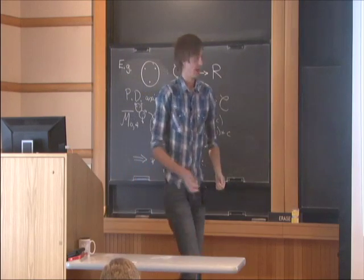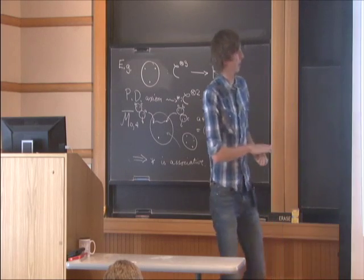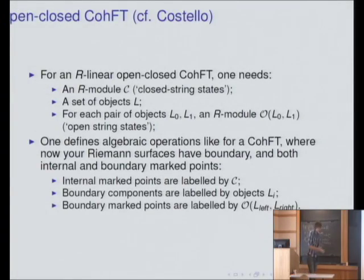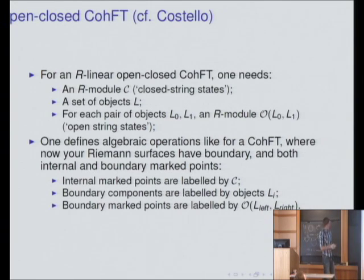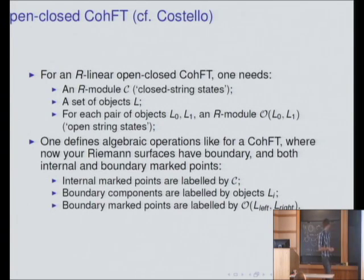A relation in this moduli space tells you this product is associative — that's the simplest case. So this is what these Gromov-Witten invariants give you: the most general thing you might hope for them to give you, this cohomological field theory. Now I'm going to start moving towards Kontsevich's reformulation of what mirror symmetry should mean. The idea is to look at an even more general structure: an open-closed cohomological field theory.